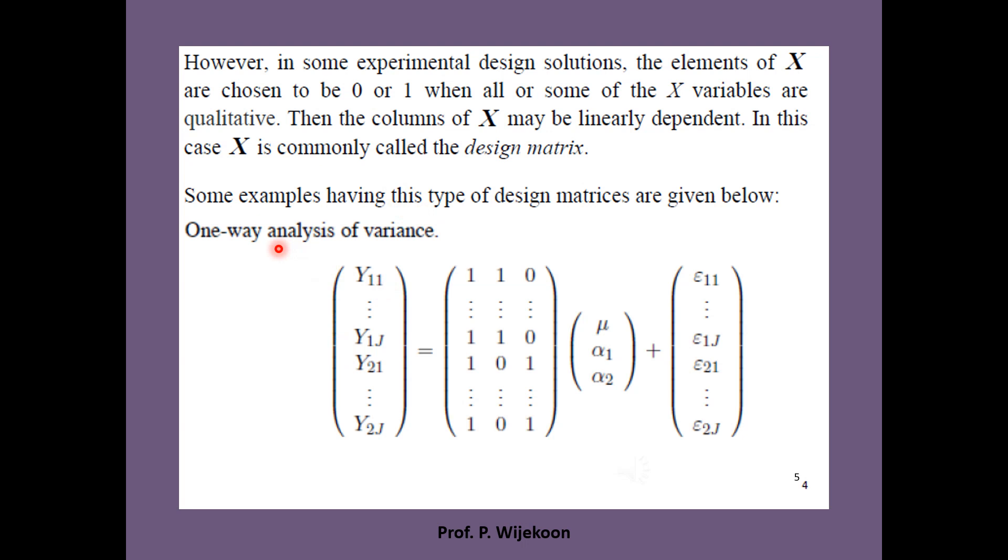One such example is the one-way analysis of variance model as shown here. Look at the x matrix in this example which includes 0 or 1. A one-way ANOVA only involves one factor or independent variable which may include three or more categorical groups.